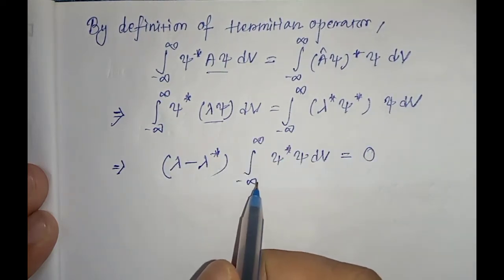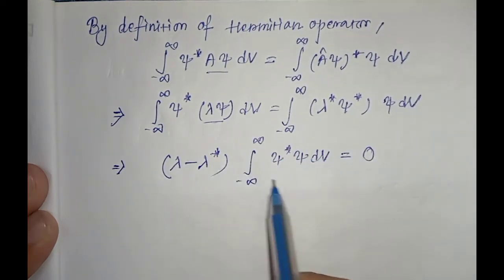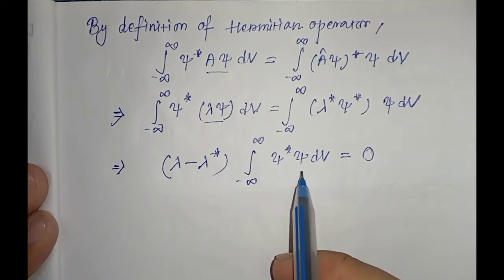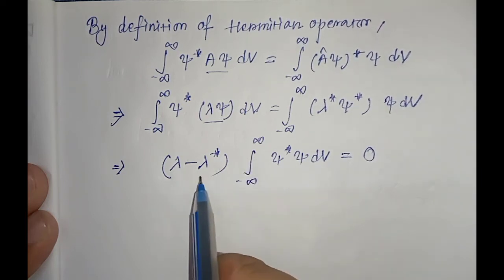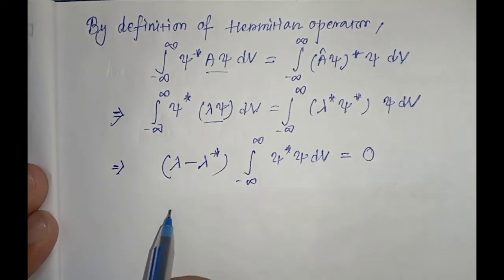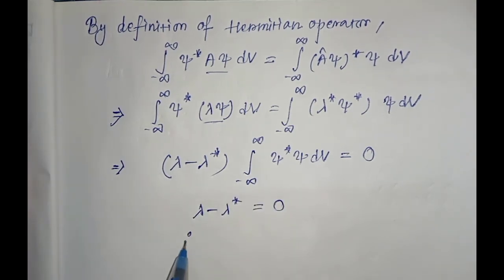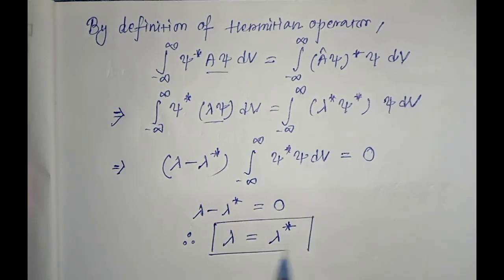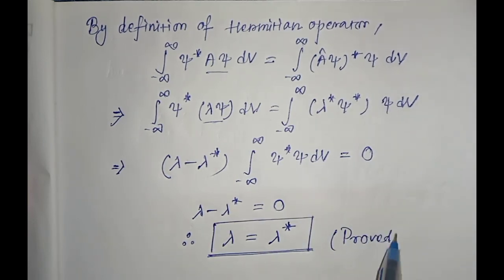From here we can say that the integration part cannot be zero, so λ − λ* must be zero. Therefore λ − λ* = 0, which gives λ = λ*. So the eigenvalues of a Hermitian operator are real. Proved.